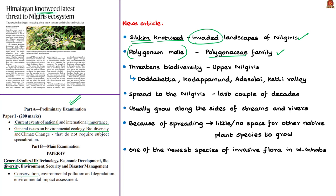Note that there is another knotweed known as Himalayan knotweed, which is a different species from Sikkim knotweed. The Sikkim knotweed is threatening the biodiversity along streams and rivers in the upper Nilgiris. It has been found in Dottavetta, Kodappamund, Adesolai and the Keti valley of Nilgiris.